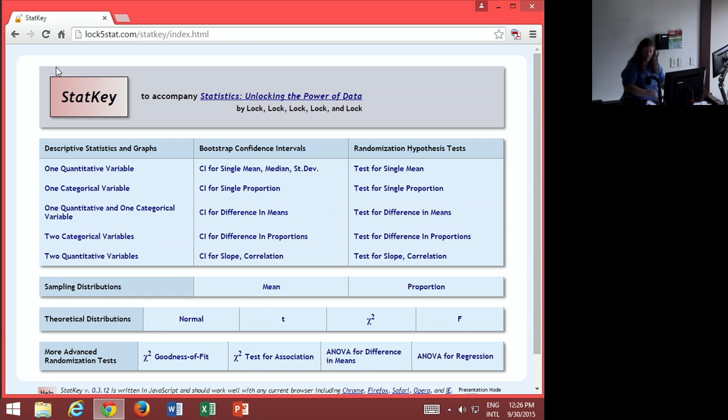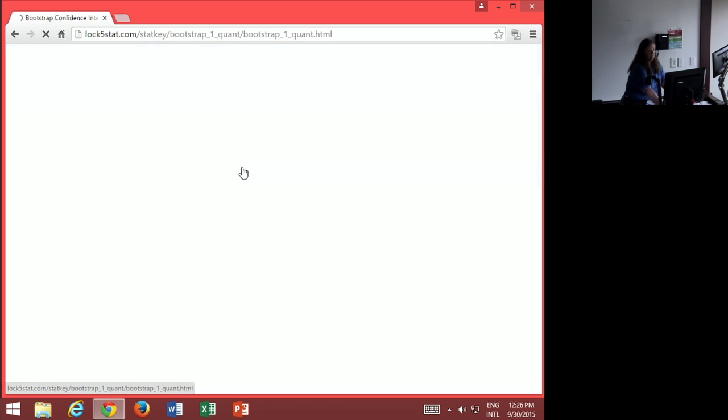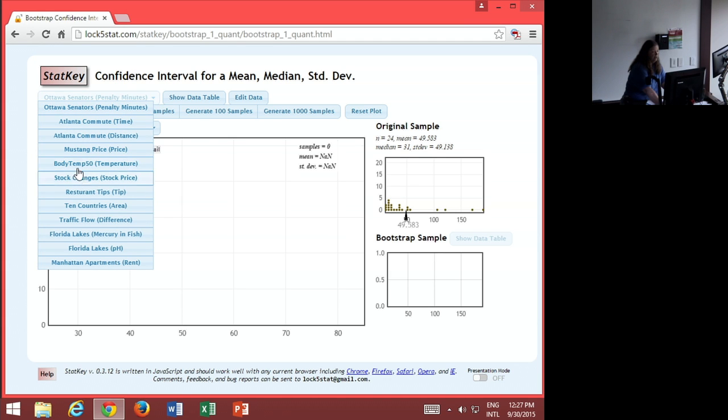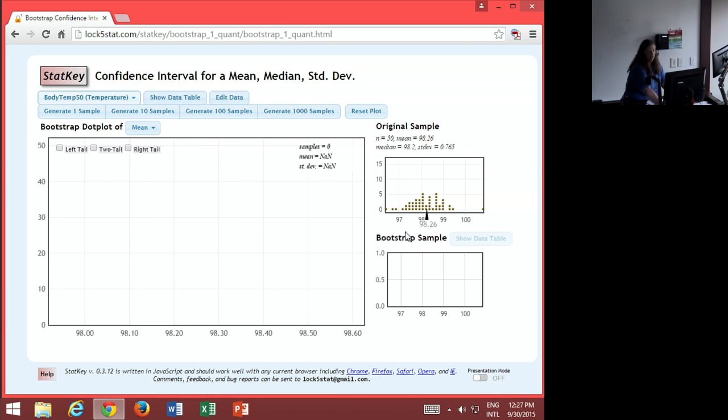Okay, it's confidence interval for mean. That's the first option under bootstrap confidence intervals. And we're going to do body temperature. So this is our 50. The 50 have a mean of 98.26 and a standard deviation of 0.765.